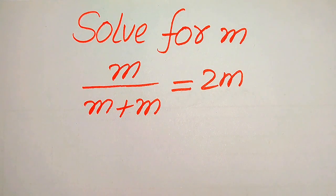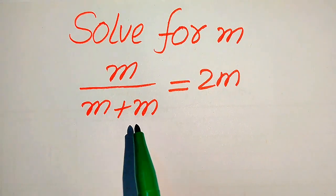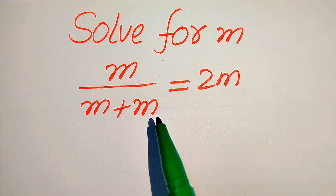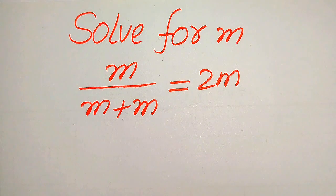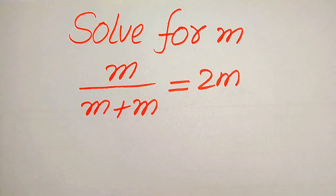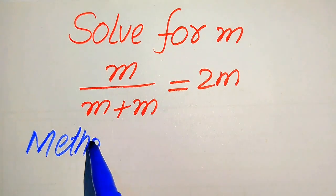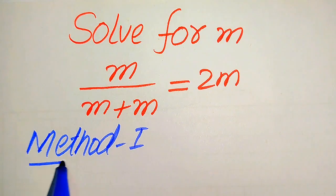Hello everyone. How to solve this problem for the values of m: if we have m divided by m plus m equals 2 times of m. Here we find all the roots of this equation, and at the last we will check which of the roots are solutions and which are extraneous roots. Please watch this video to the end. We solve this problem using two methods.